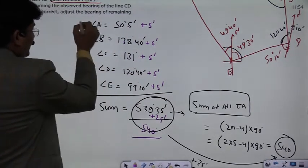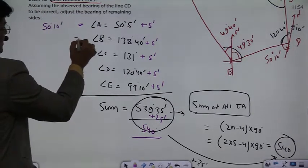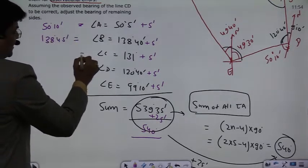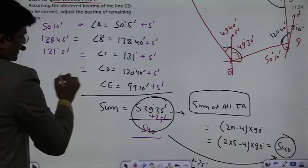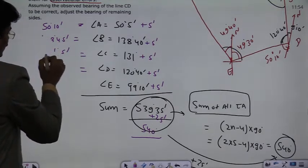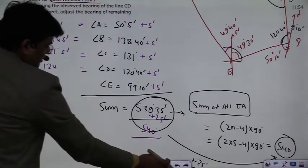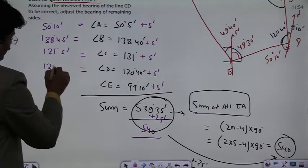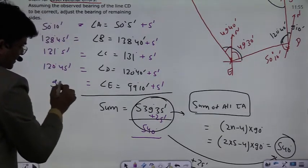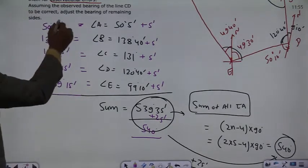After applying the 5-minute correction to each angle, the corrected values are: Angle A = 50 degrees 10 minutes, Angle B = 138 degrees 45 minutes, Angle C = 131 degrees 5 minutes, Angle D = 120 degrees 45 minutes, Angle E = 99 degrees 15 minutes. The corrected sum equals 540 degrees.